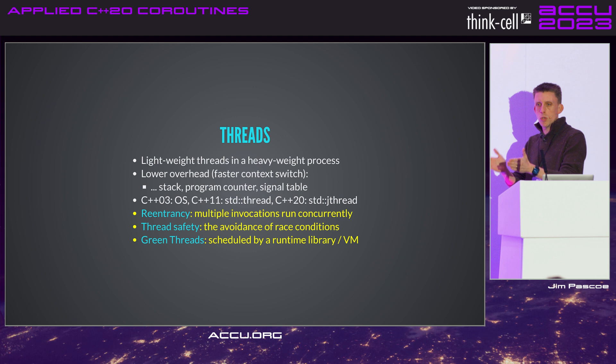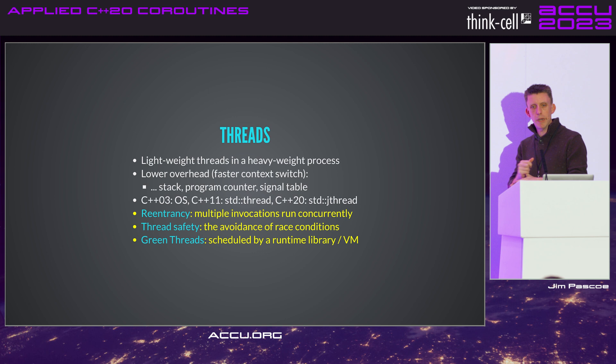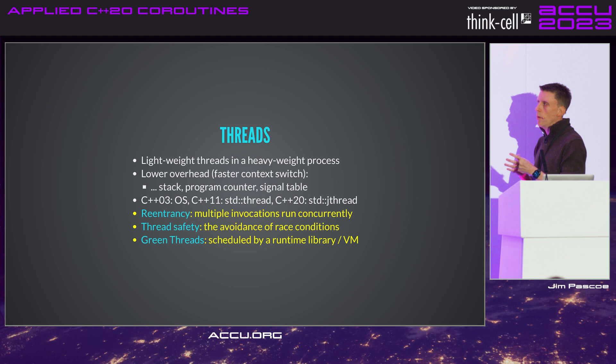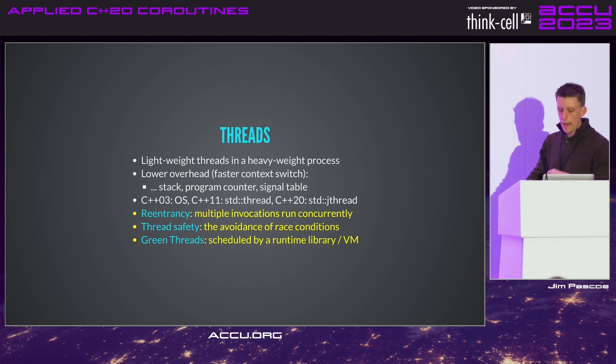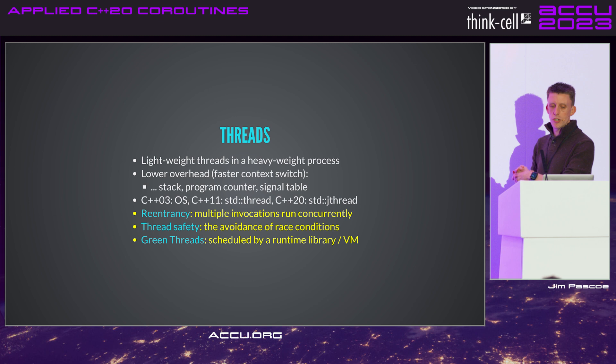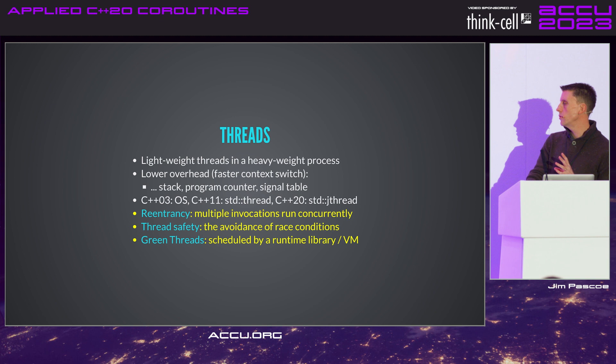This was the whole point of inventing threads — lightweight threading in a heavyweight process. Rather than swap out the entire process when one bit is blocked, other parts can continue doing useful work, especially in networking and event-driven applications. Thread context switching has much lower overhead: we only need to worry about the stack, program counter, and signal table. In C++03 you used OS libraries like pthreads; C++11 gave us std::thread; C++20 gave us std::jthread.